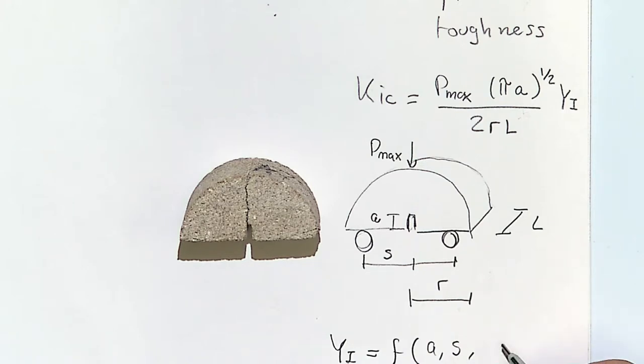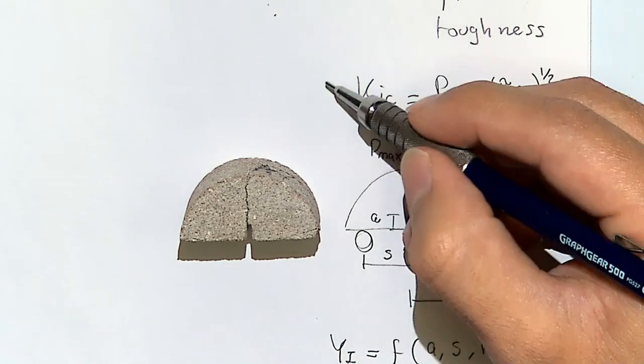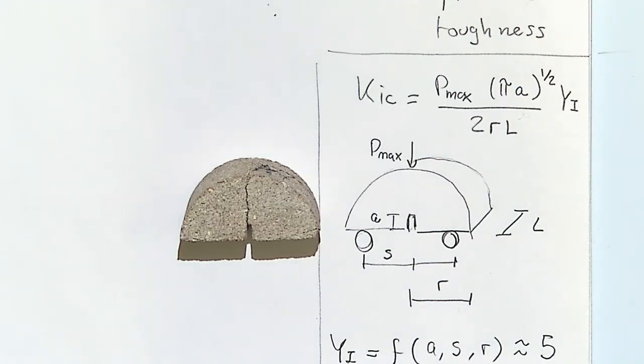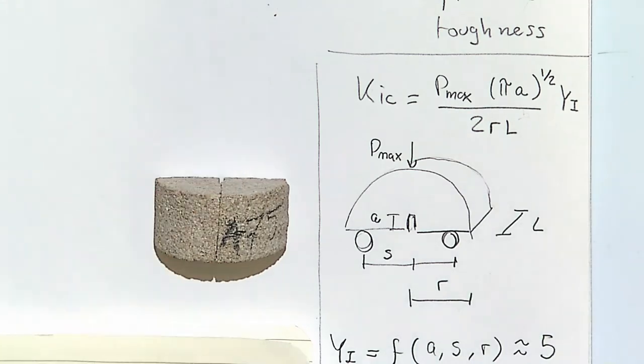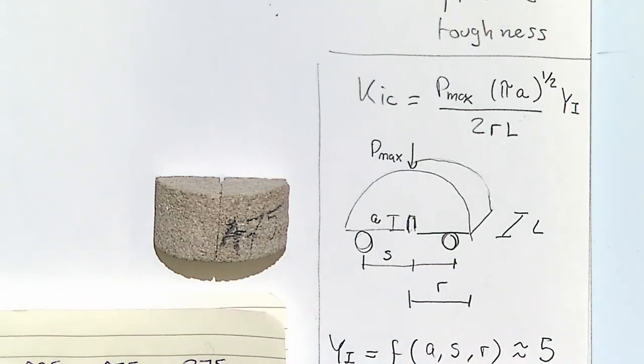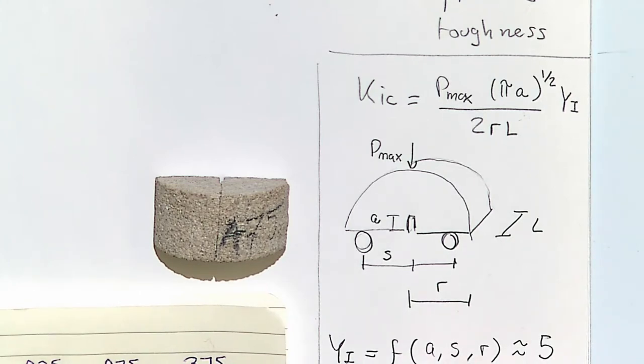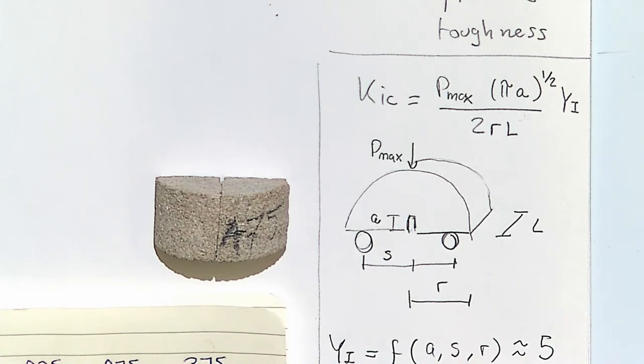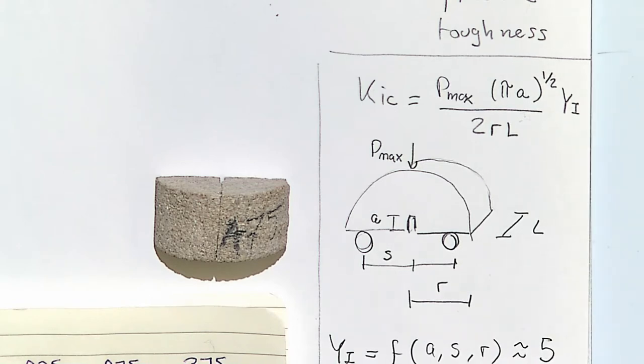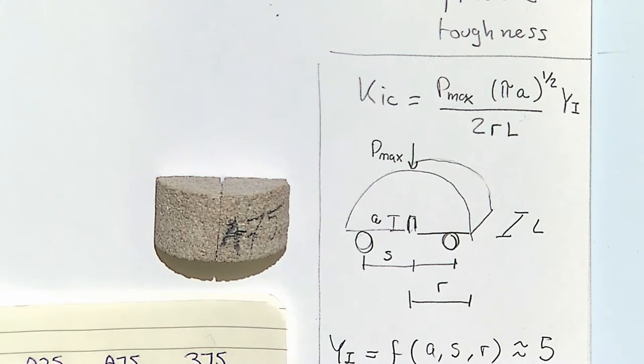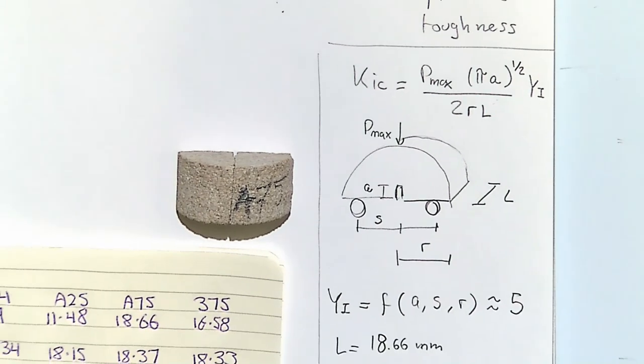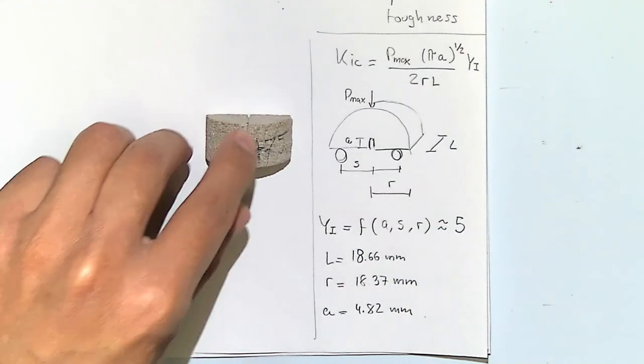A few more additional things that you need in order to solve this problem: this is sample A75. A75 had an L equal to 18.66 millimeters, the radius is 18.37 millimeters, and the notch is 4.82 millimeters. With all these geometrical factors you should be able to compute this toughness.